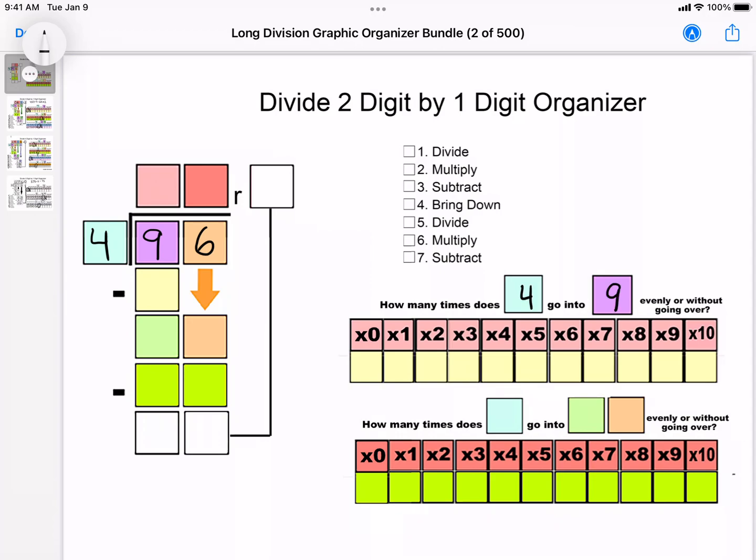We start skip counting: 0, 4, 8, 12. You always have them go to the number that's past the number you're looking for. So you say 12 is too much, they cross it off, and then they circle the one before it.